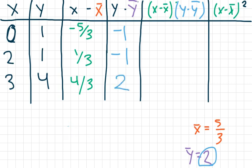The next step is to multiply these two columns together. Negative five thirds times negative one gives me positive five thirds. One third times negative one gives me negative one third. And four thirds times two gives me eight thirds.